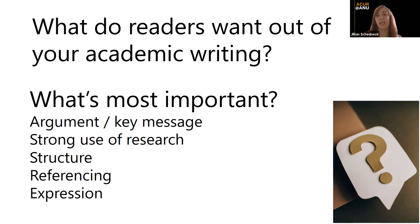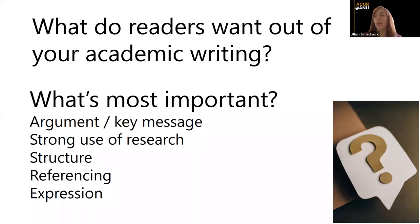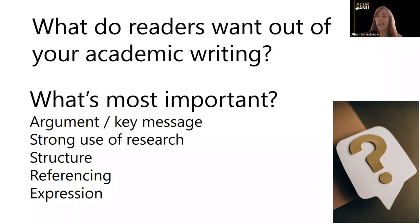Your rubric often says a strong use of research is second — how you're using your evidence and supporting your argument. Your structure goes along with both of those things. Then, lesser but still very important, is referencing and expression. That needs to be there and done well, but the key things for decisions around publication or getting a high mark have to do with argument, key message, research, and structure. Expression is something you can only really work on once your argument is set out well, your structure is clear, and you're using research well to support your argument.